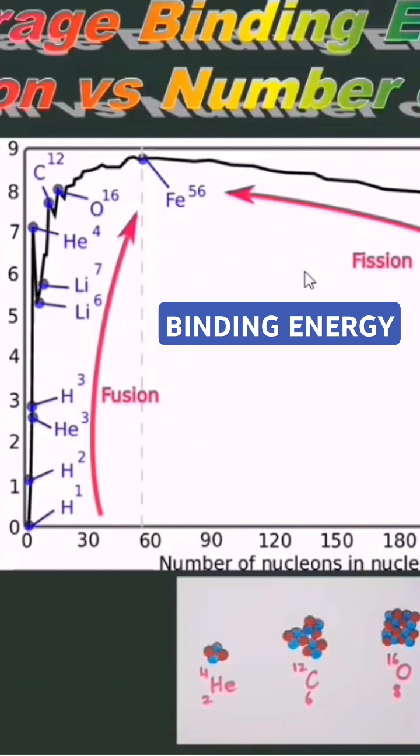Both fission and fusion processes tend to increase the binding energy per nucleon of the particles involved. However, we can observe some peaks for lower mass numbers that indicate higher values of binding energy for specific nuclei.